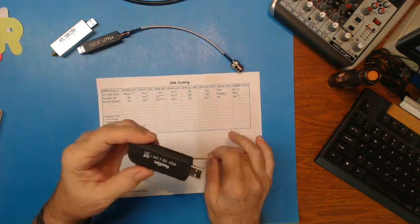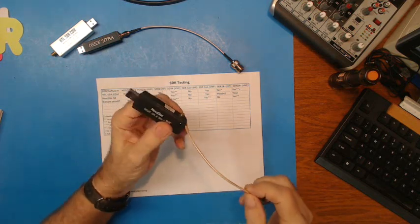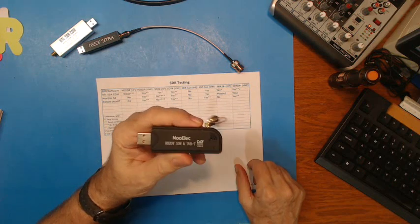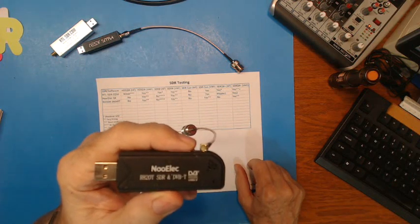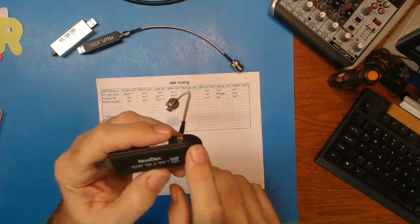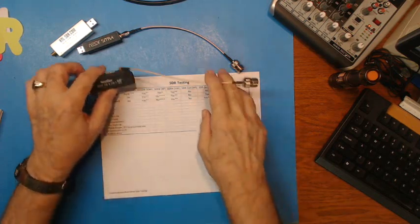And the last one, I think this is the very first one I bought. At the time I paid $19.95. I think you can get them for less than $10 now. This is the NoahElect and it has this funky connector so I had to buy an adapter for it.